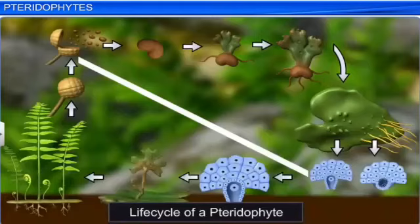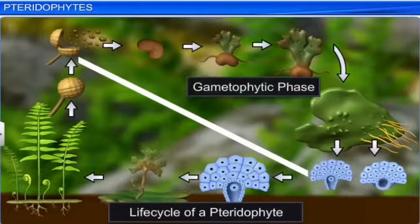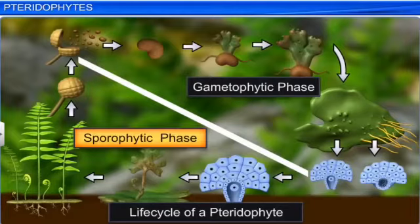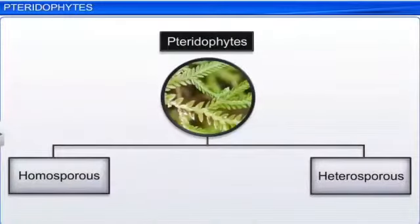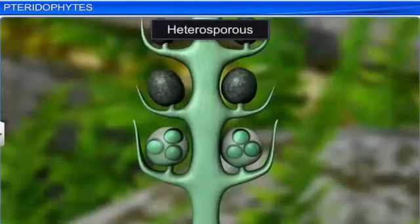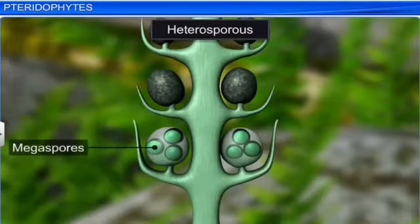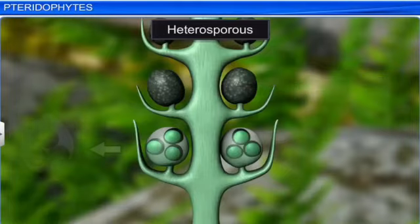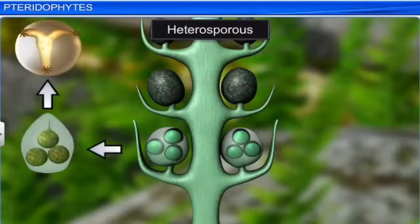If spores are of the same kind, it is said to be homosporous; if they are of different kinds, it is said to be heterosporous. This is the entire life cycle showing the sporophytic and gametophytic stages, starting from the sporophytic stage and resulting into the gametophyte with the prothallus formation. In case of heterosporous plants like Selaginella, one spore will be larger — the megaspore — and the other smaller — the microspore. They germinate and give rise to the female and male gametophytes respectively. The female gametophyte is retained on the parent sporophyte for variable periods, and the development of the zygote into the young embryo takes place within the female gametophyte.